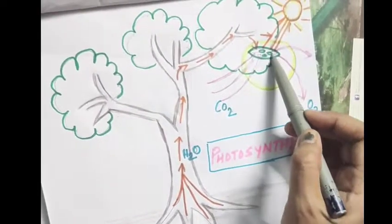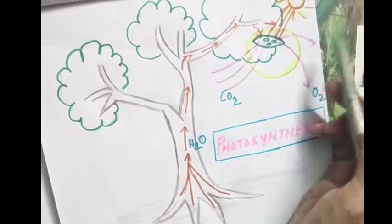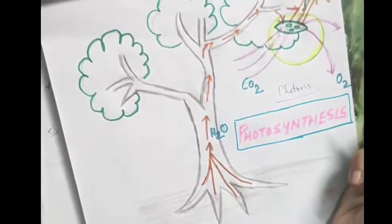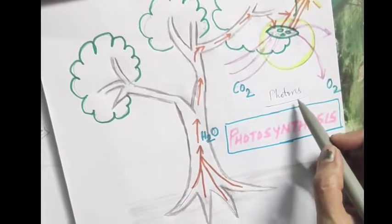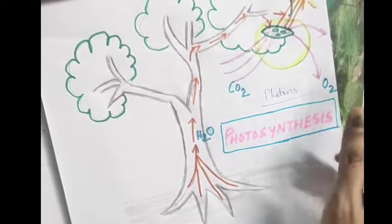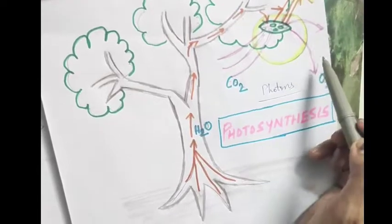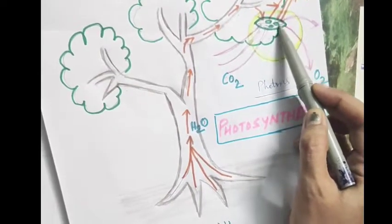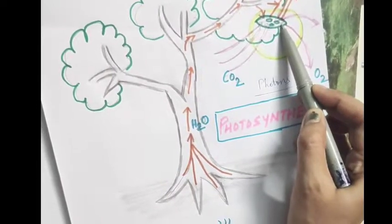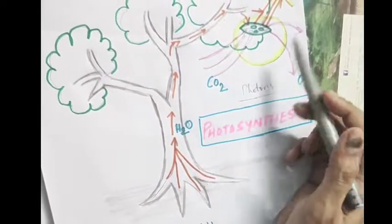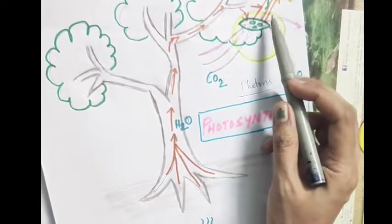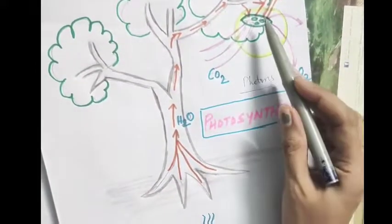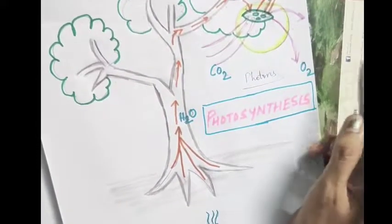Chlorophyll pigments are capable of absorbing sunlight from the sun. They absorb energy in the form of photons. These photons help in the formation of glucose — the photons are absorbed by the chlorophyll, and using the raw materials carbon dioxide and water, glucose is formed and oxygen is released out.